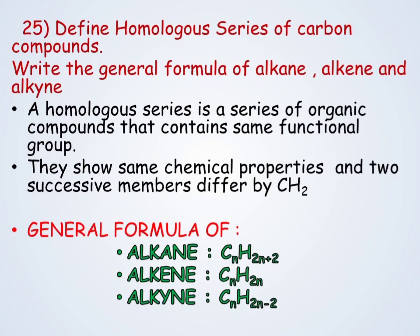Different homologous series of carbon compounds and their general formulas: a homologous series is a series of organic compounds that contain the same functional group. They show the same chemical properties, and successive members differ by 1 carbon and 2 hydrogen atoms. General formula of alkane: CnH₂ₙ₊₂; alkene: CnH₂ₙ; alkyne: CnH₂ₙ₋₂.